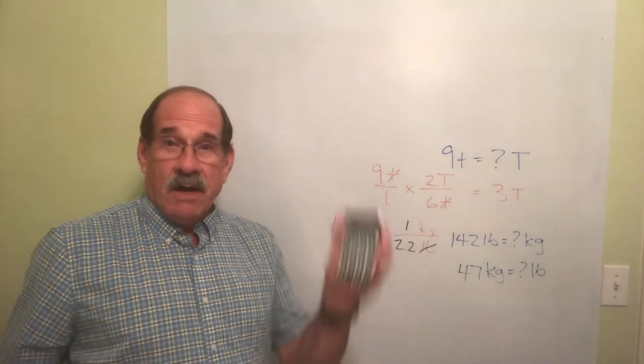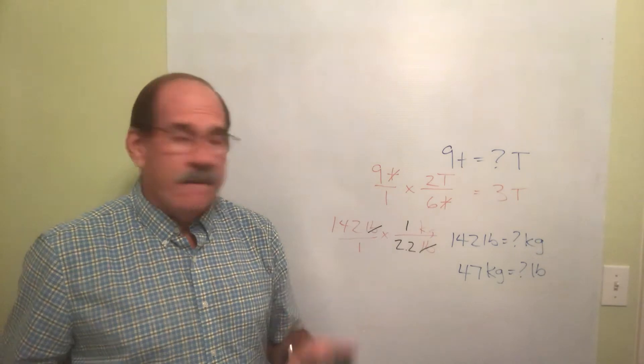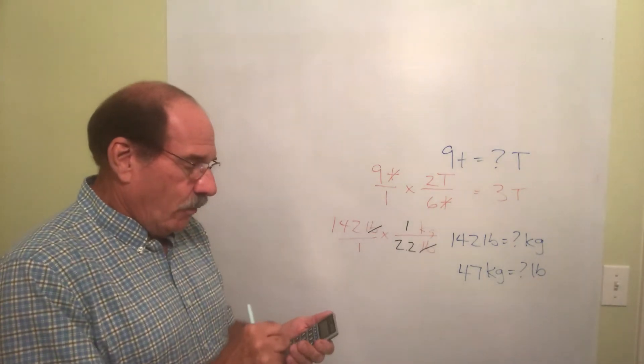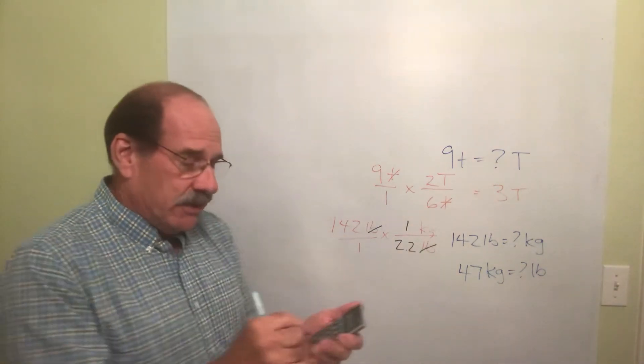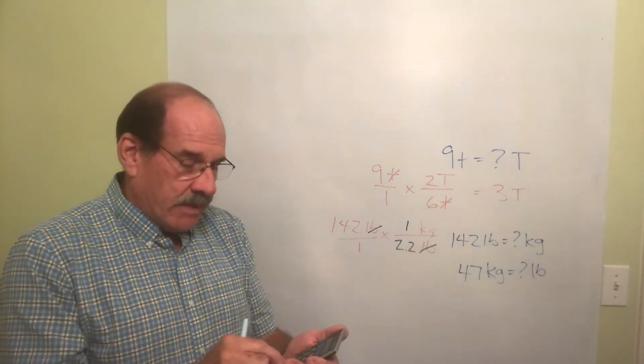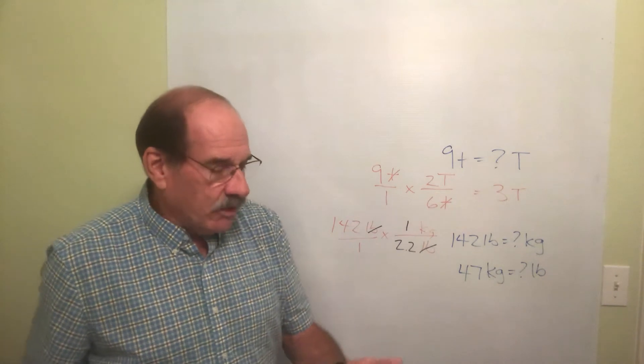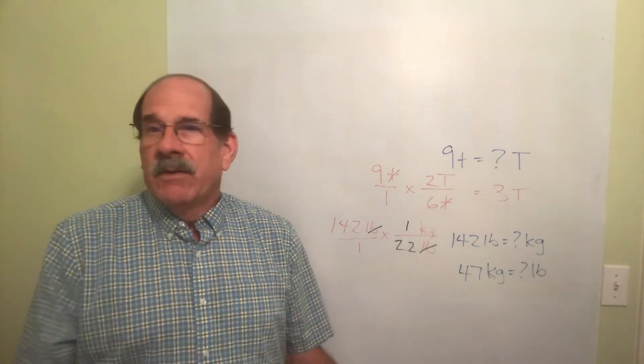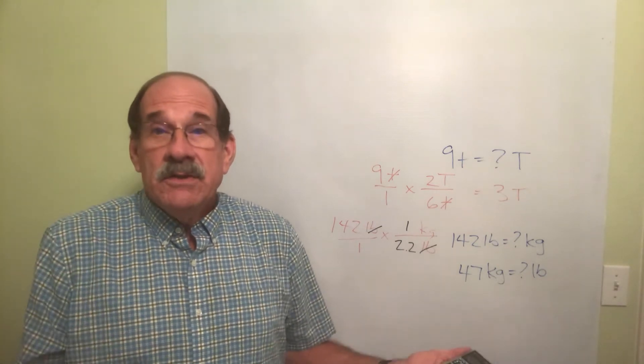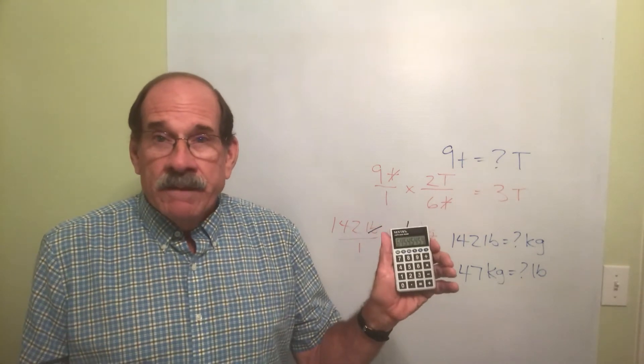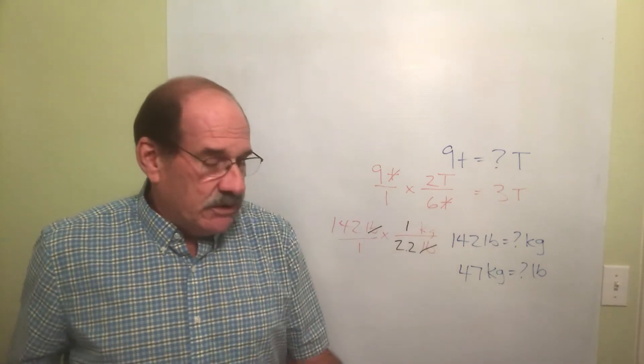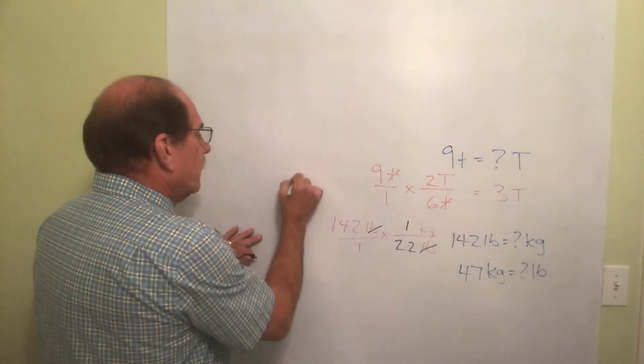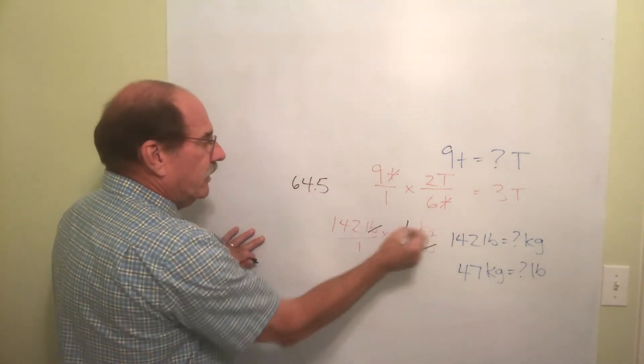And of course the pounds up here cancels out the pounds down here. Using your handy-dandy cheap little one-dollar calculator, that's on top, that's on the bottom. I take 142, I divide it by 2.2, and the answer is 64.545454, it keeps going. How far do I round off? Tenths is fine. 64.5 sounds like a pretty good answer to me. 64.5 kilograms.